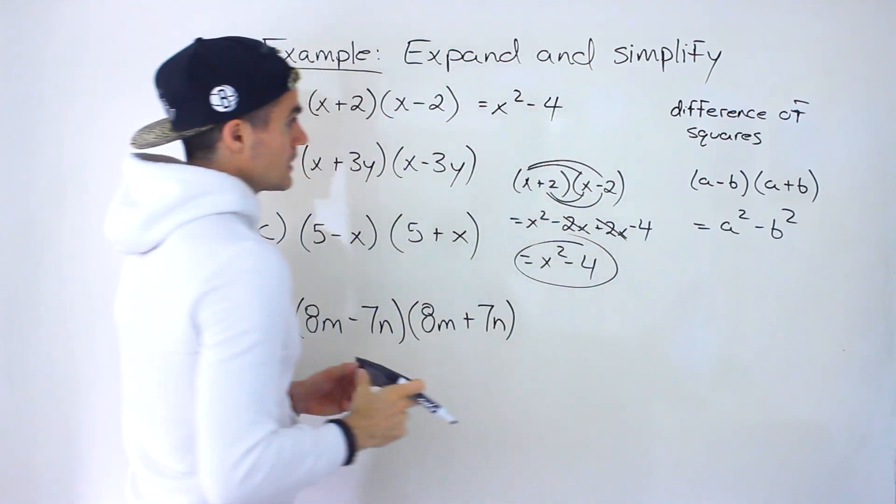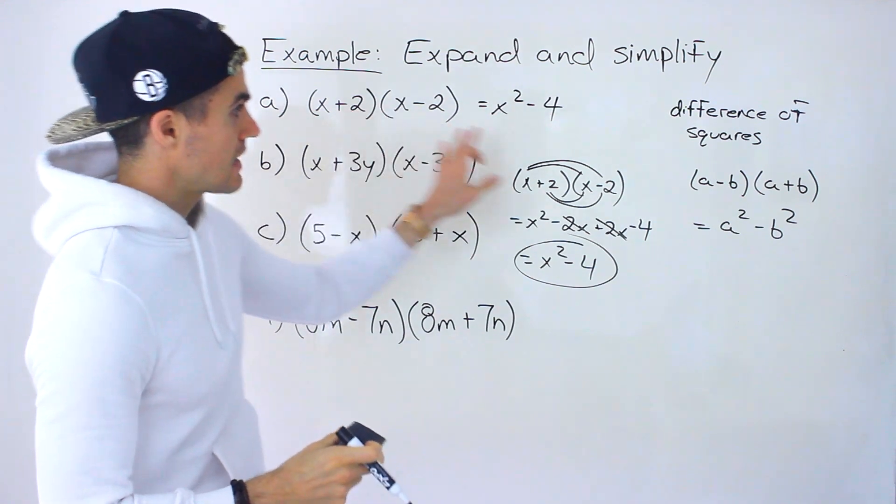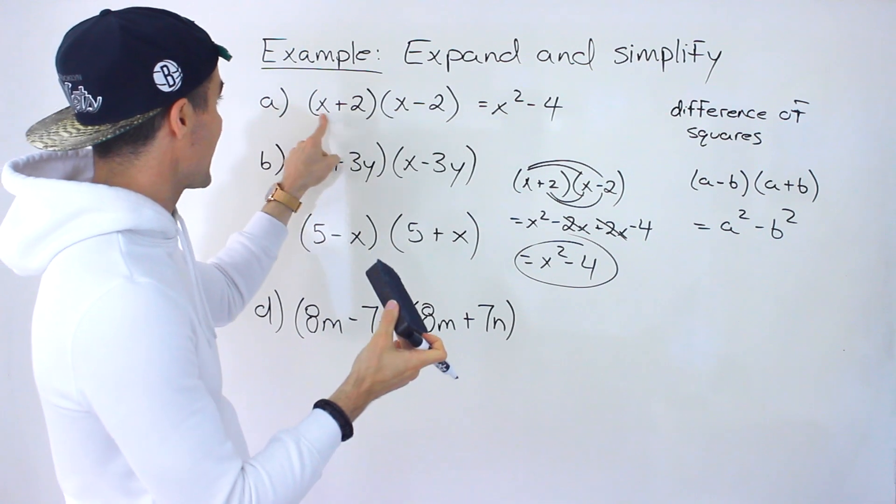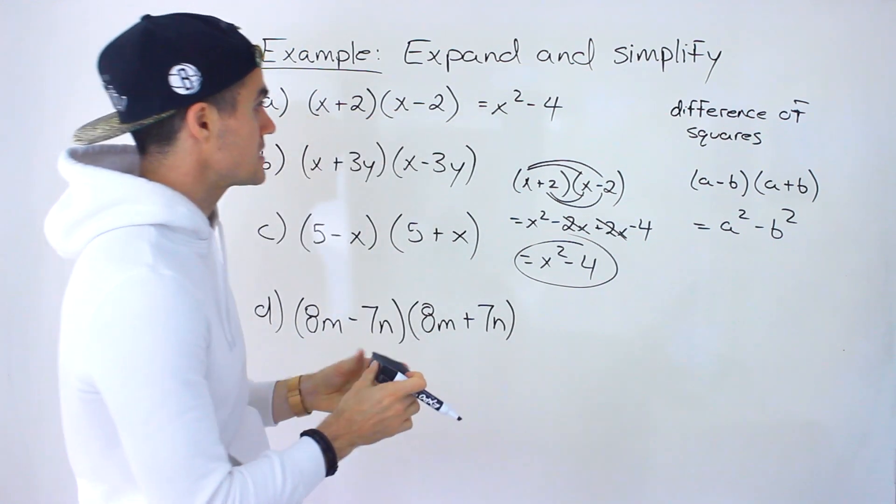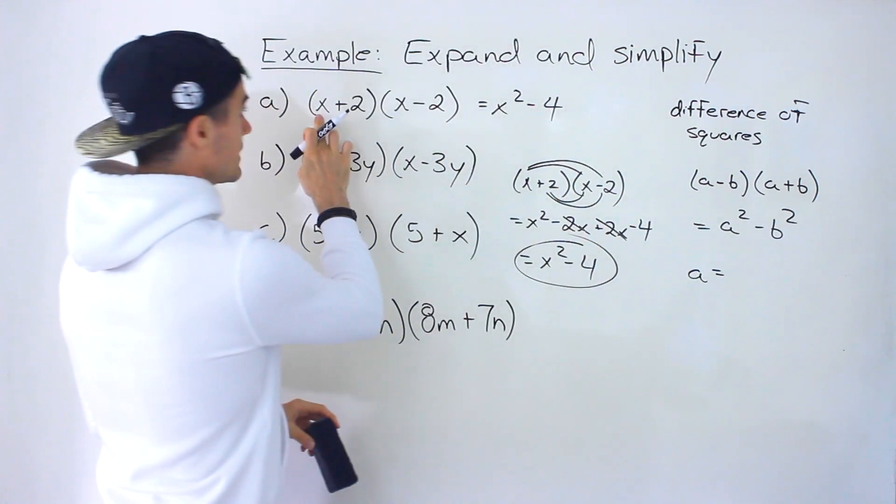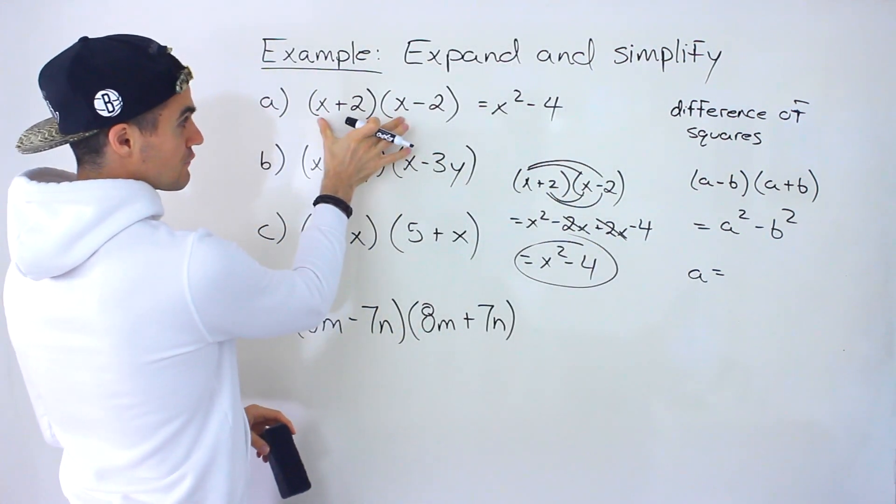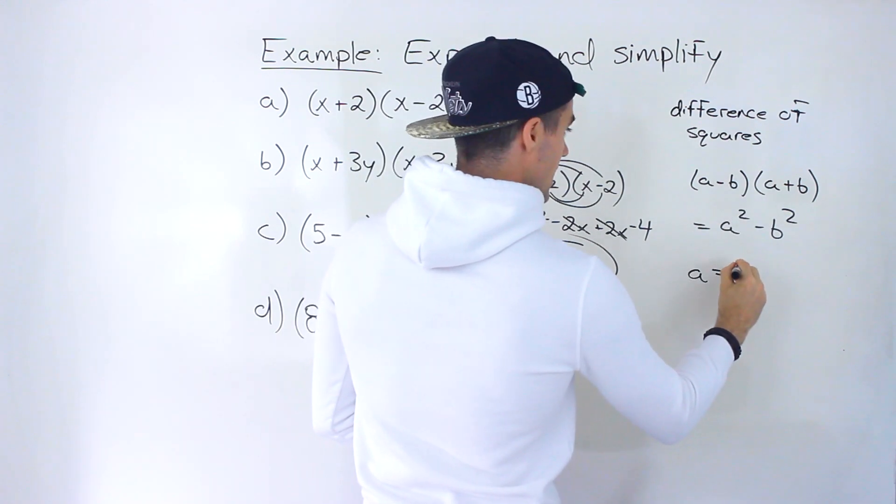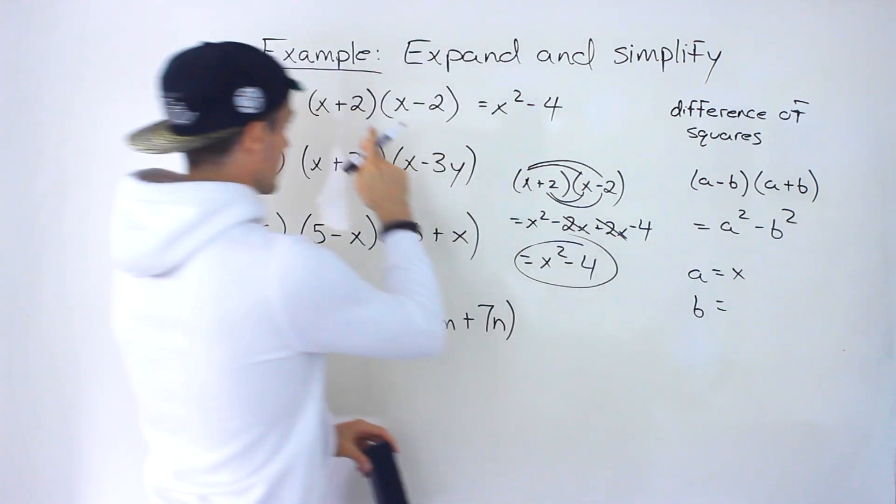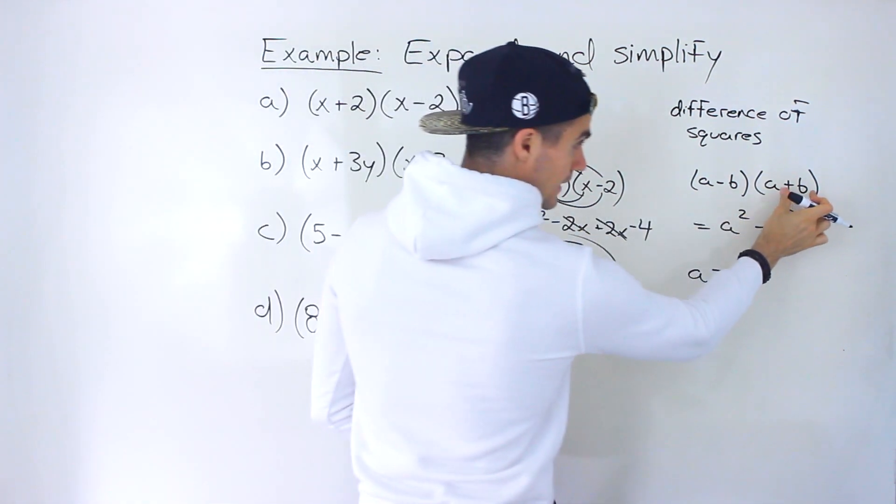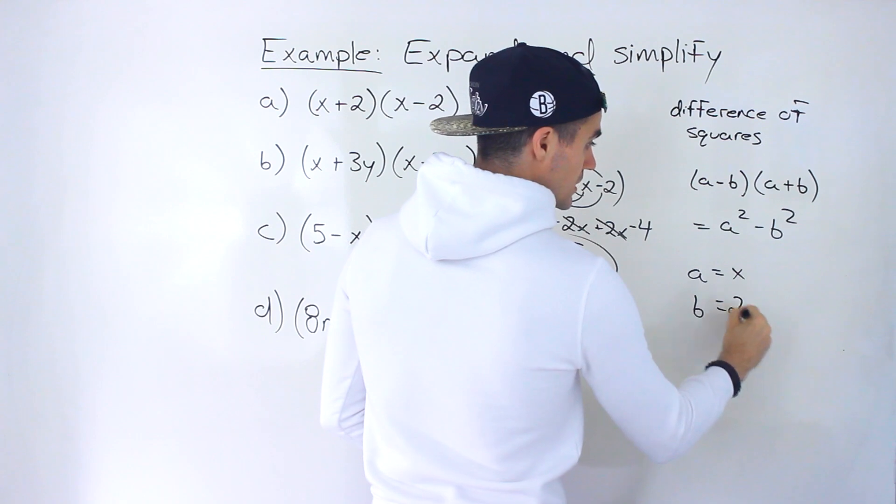Now, if we take this and apply it here, notice it's in a different order, but it doesn't matter because you're multiplying. So notice it's a plus b times a minus b. So in this case, the a is like the x term, right? That first term in the binomial. So in this case, the a is like the x, and then the b is like this 2 over here that's getting added and subtracted. So the b is 2.